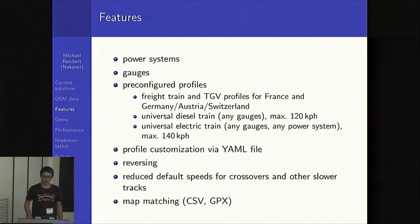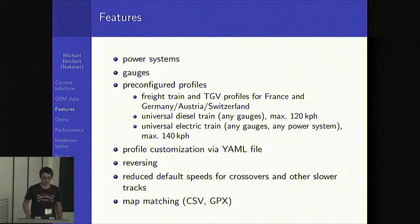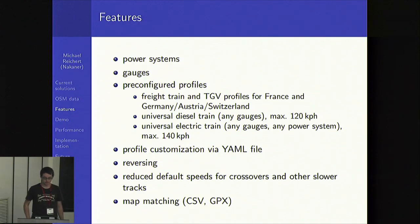There's a universal profile for diesel trains on any gauge with a speed limit of 120 kilometers per hour, and a profile for a universal electric train that supports any power system at any gauge and is 140 kilometers per hour fast. You can write your own profiles using a YAML configuration file — just add a few lines to the GraphHopper configuration file. The routing avoids unnecessary reversing; instead it will make a detour if that is faster than reversing the train. It has reduced default speeds for crossovers and slower tracks, so it uses the fastest rather than the shortest route through a station. It also offers map matching for CSV and GPX input and output files.